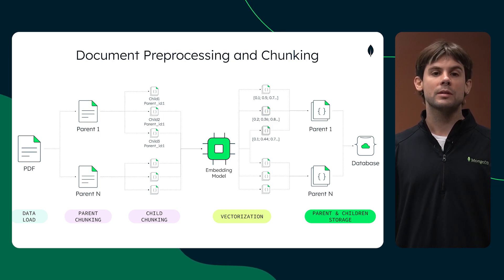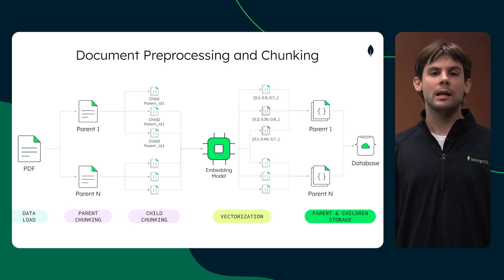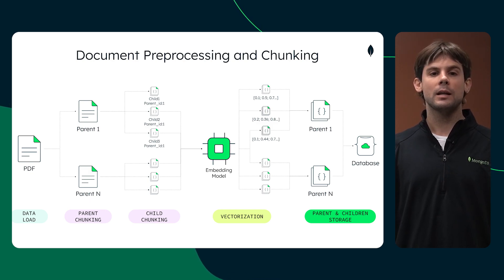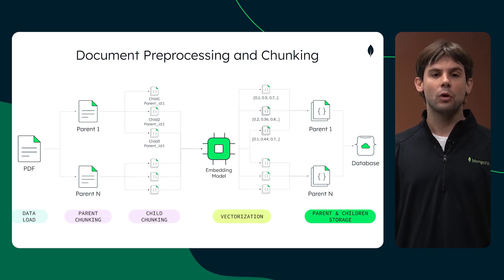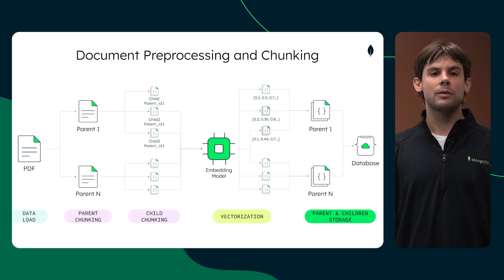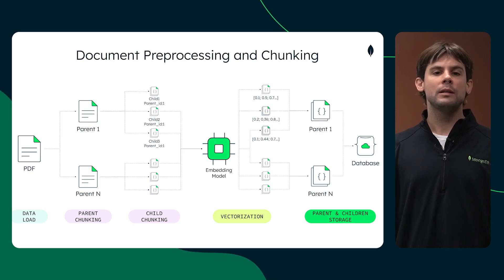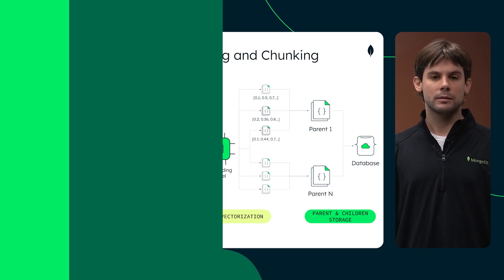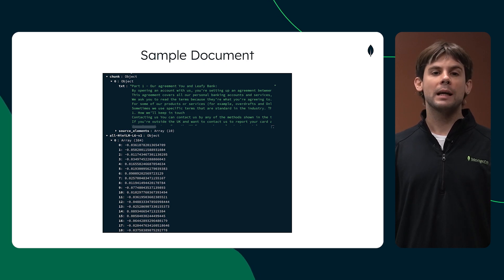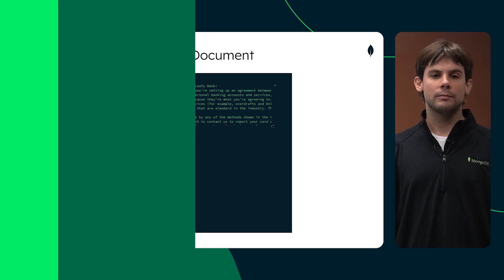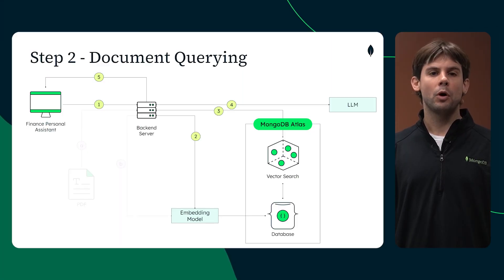The chunking process uses a sliding window technique, ensuring that transitional data between chunks is preserved and maintaining the continuity of context. Once the document has been transformed into vectorized chunks, they are passed through an embedding model to generate vector embeddings. The embedding model can be selected according to the user's requirements. Both the chunks and their corresponding vectors are stored in MongoDB.